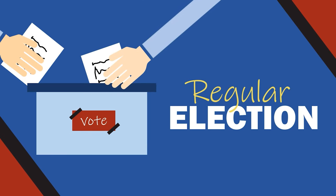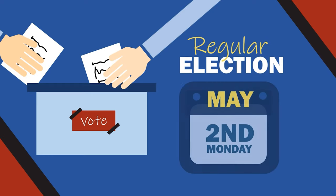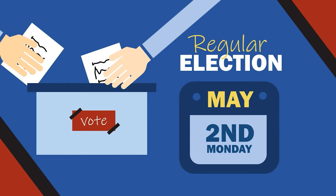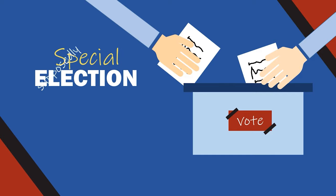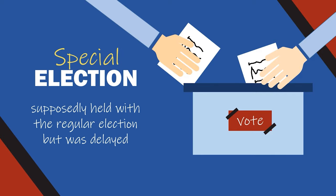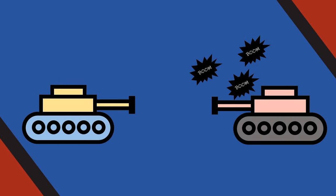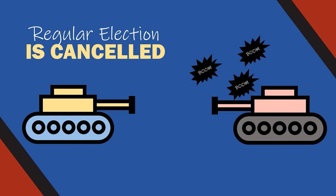Moving on to elections, there are two types. First is the regular election — the 1987 Philippine Constitution states that unless otherwise provided by law, the election of members of Congress is held on every second Monday of May. The second type is the special election, which is an election that was supposed to be held with the regular election but was delayed — for example, due to a war in one of the places in Mindanao.